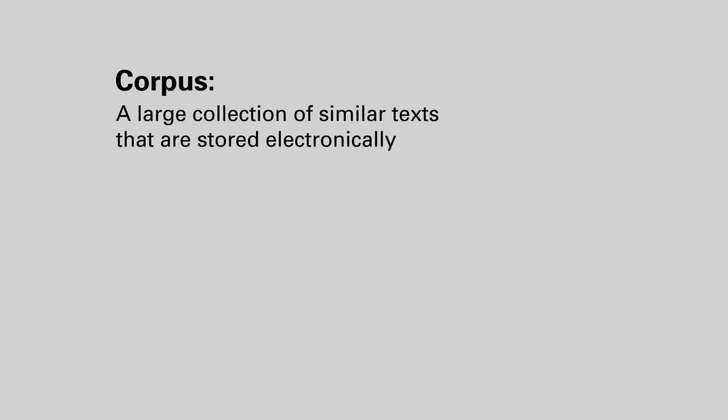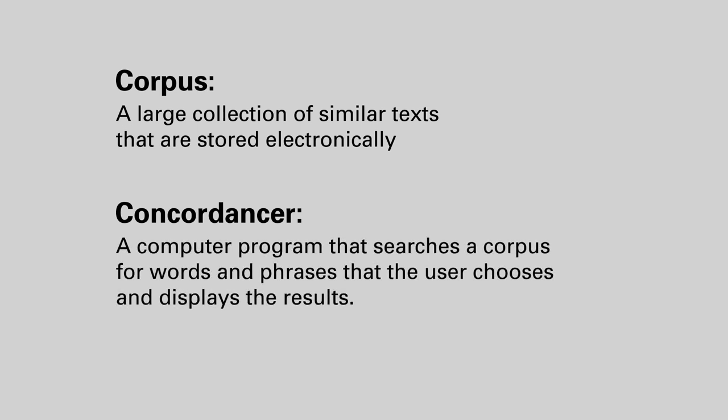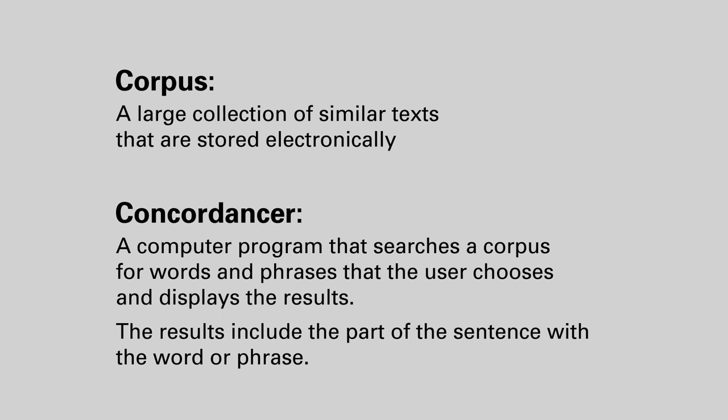Linguists have been using technology for finding examples of words in use for over 50 years. They work with a corpus of texts and a concordancer. The corpus is a large collection of similar texts that are stored electronically. A concordancer is a computer program that searches a corpus for words and phrases that the user chooses and displays the results, including the part of the sentence with the word or phrase. Today, teachers and students with access to the internet also have access to a corpus and concordancer to find their own examples of how words are used.